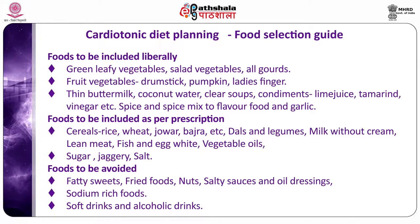Cardiotonic diet planning — food selection guide. Foods to be included liberally include green leafy vegetables, salads such as cucumber, radish, tomato, and onion, all vegetables, all gourd varieties such as bitter gourd and snake gourd, and fruits and vegetables such as drumstick, pumpkin, lettuce, and finger millet. Also buttermilk, spices, and garlic.